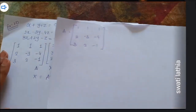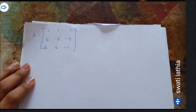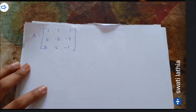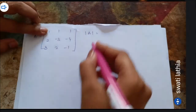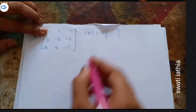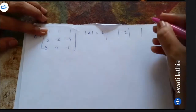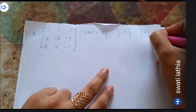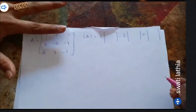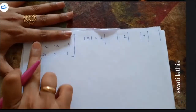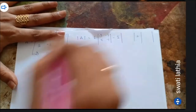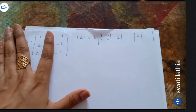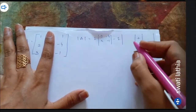Now first we need to find the determinant, because we have to be sure the determinant is not 0. If it is 0 we cannot find x, y, z. Okay, let us find the determinant. Expanding along the first row...